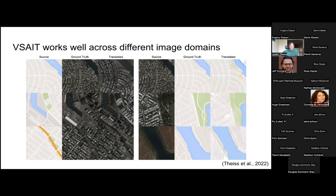Going from aerial photos to Google Maps is more difficult because many maps contain roads and paths in forest regions and parks that are hard to see even as a human, making the translation particularly challenging.